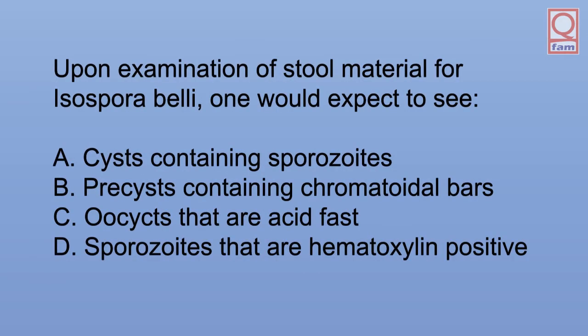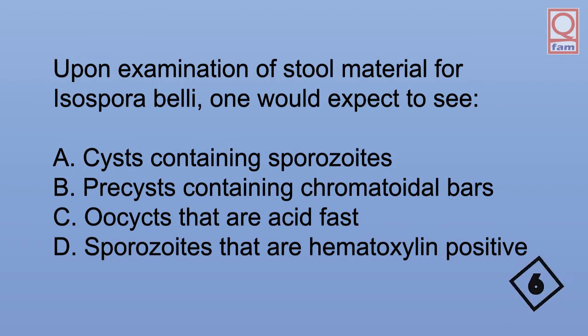Upon examination of stool material for Isospora belli, one would expect to see: A. Cysts containing sporozoites. B. Pre-cysts containing chromatoidal bars. C. Oocysts that are acid-fast. D. Sporozoites that are hematoxylin-positive. The answer is C. Oocysts that are acid-fast.